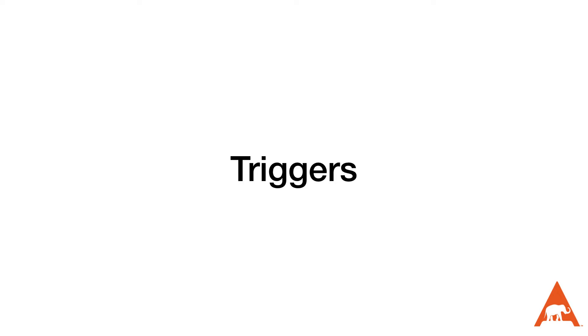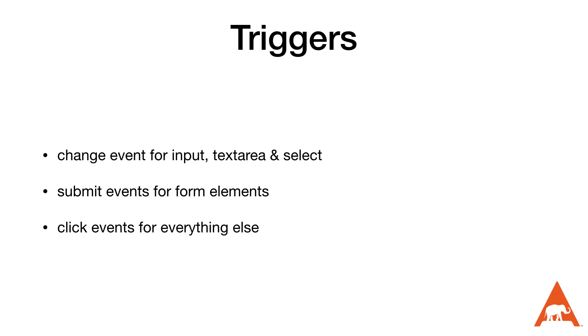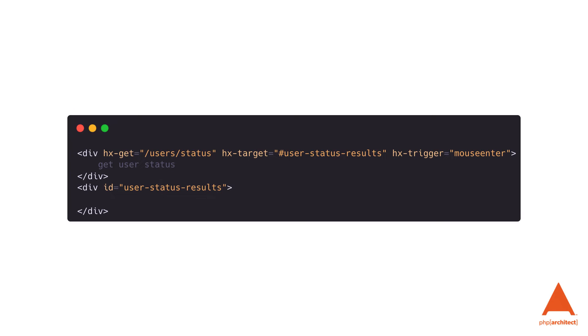HTMX triggers AJAX requests using the natural event of an element, which includes the change event for inputs, text areas, and selects, submit events for form elements, and click events for just about everything else. However, we can use the hx-trigger attribute to specify which event will cause the AJAX request. For example, if we wanted to load our user status when the mouse entered our div, we would specify the hx-trigger attribute with a value of mouseEnter.